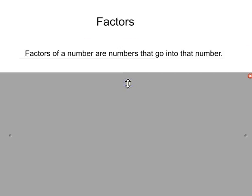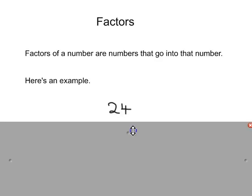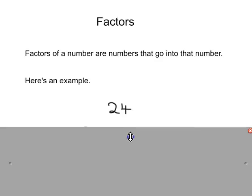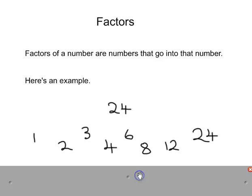Hello and welcome to this video presentation on factors and multiples. Starting with factors, what are they? Factors of a number are simply other numbers that go into that number. Here's an example for you. If we look at the number 24, the factors of 24 are the numbers that would have 24 in their times table.